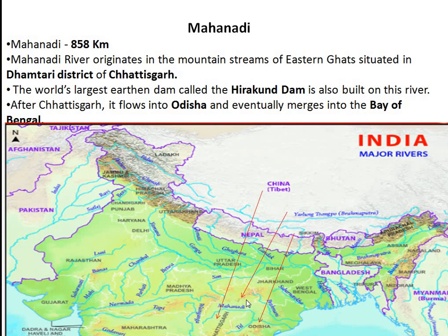Next is Mahanadi, which is towards the east side and is 858 kilometers. The Mahanadi river originates in the mountain streams of the Eastern Ghats in the Dhamtari district of Chhattisgarh. The world's largest earthen dam, called the Hirakud dam, is built on this river — this is an important MCQ point. After Chhattisgarh, it flows through Odisha and eventually merges into the Bay of Bengal.